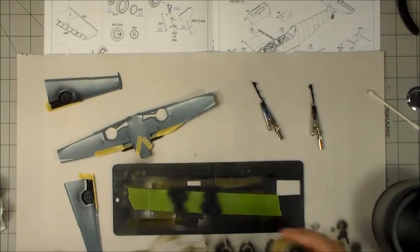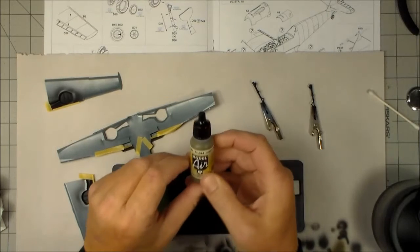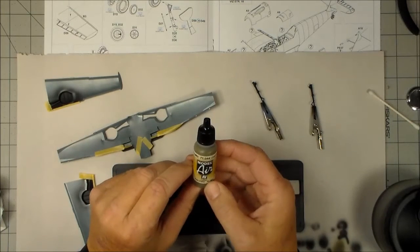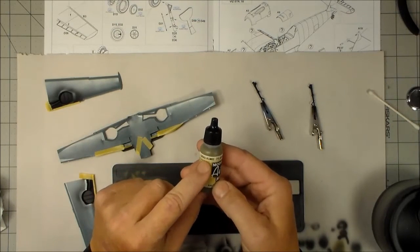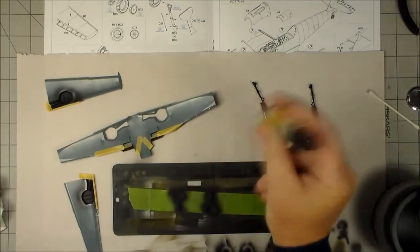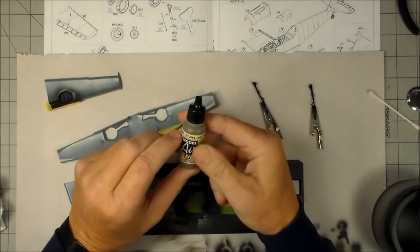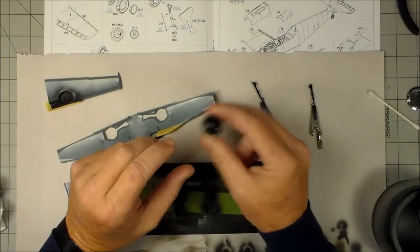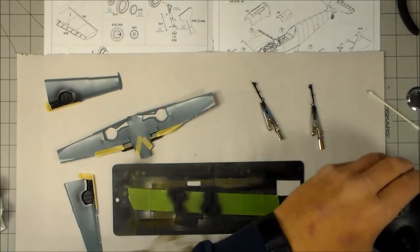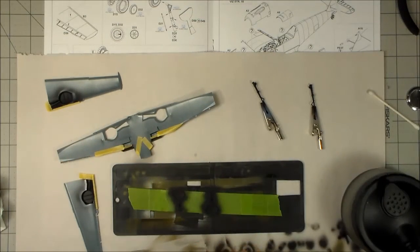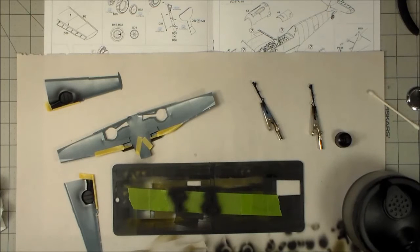All right, the primer's had time to dry. So I'm going to use Vallejo Model Air RLM2. It's already pre-thinned, doesn't need to be thinned anymore, so we can go right from the bottle. I'm going to put a couple of drops in the old handy-dandy airbrush here.